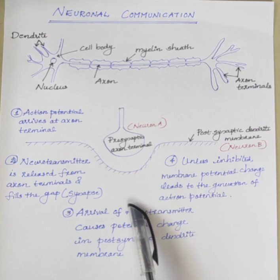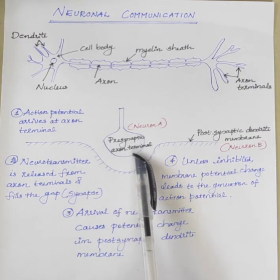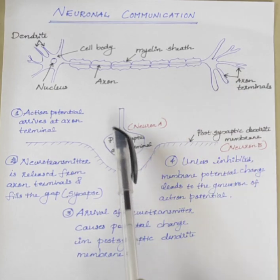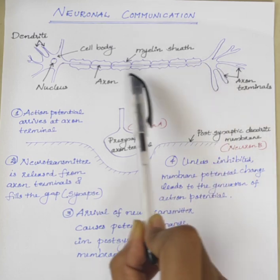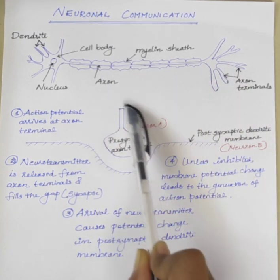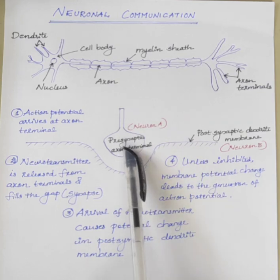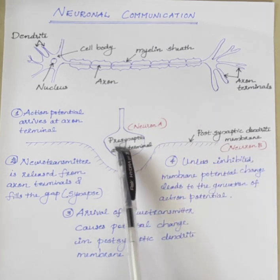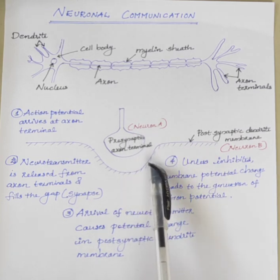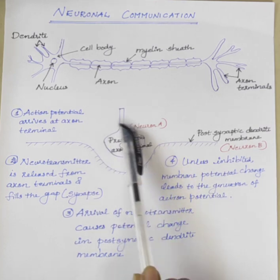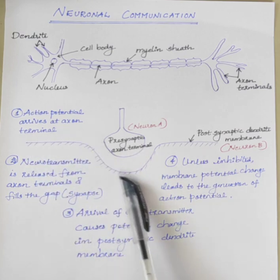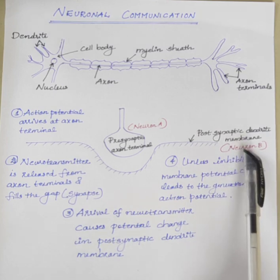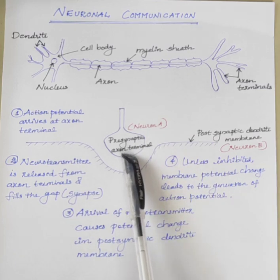In order to understand neuronal communication, just go through this figure. Here, the pre-synaptic axon terminal is shown. This one is neuron A, whose axon terminals are shown here. Information from the dendrite passes through the axon then to the axon terminals. We have to transmit information from neuron A to neuron B — that is, from the axon terminal of neuron A to the dendrite terminal of neuron B. This portion is known as the pre-synaptic axon terminal, and this portion is known as the post-synaptic dendrite membrane, that is, the dendrite of neuron B.